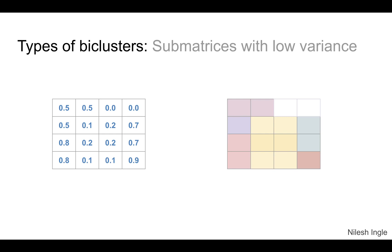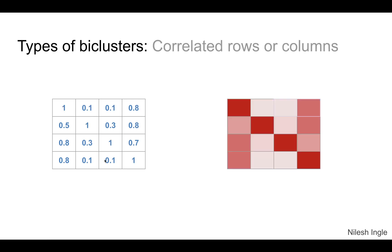Likewise, submatrices with low variance. Within this particular matrix, there's a small part which has low variance—the values outside fluctuate between 0.8 and 0, whereas the values within this small region shown in yellow fluctuate between 0.1 and 0.2 only. There are also correlated rows and columns, with areas of high correlation shown by dark red squares and areas with low correlation shown by lighter red colors.